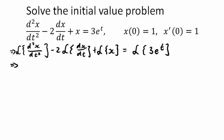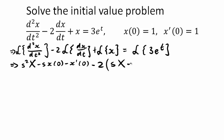The Laplace transform of the second derivative, from the formula sheet, is s²X - s·x(0) - x'(0). Then minus 2 times the first derivative gives -2(sX - x(0)). Plus the Laplace transform of x, which is just capital X. That equals the Laplace transform of the right-hand side: 3 over (s - 1).